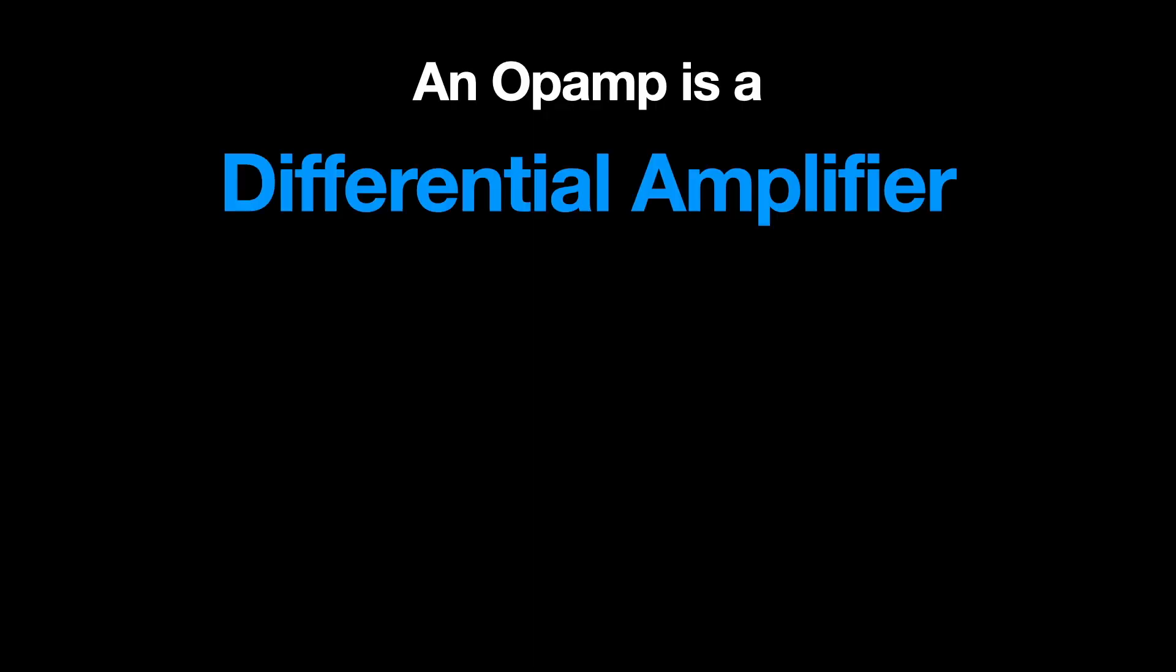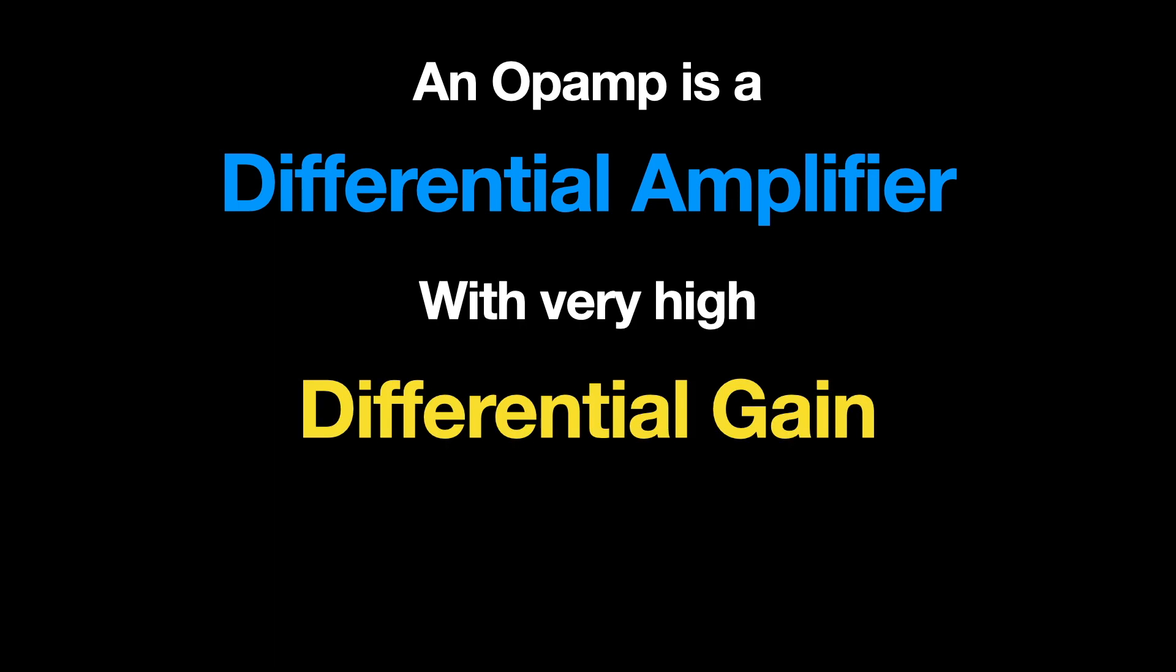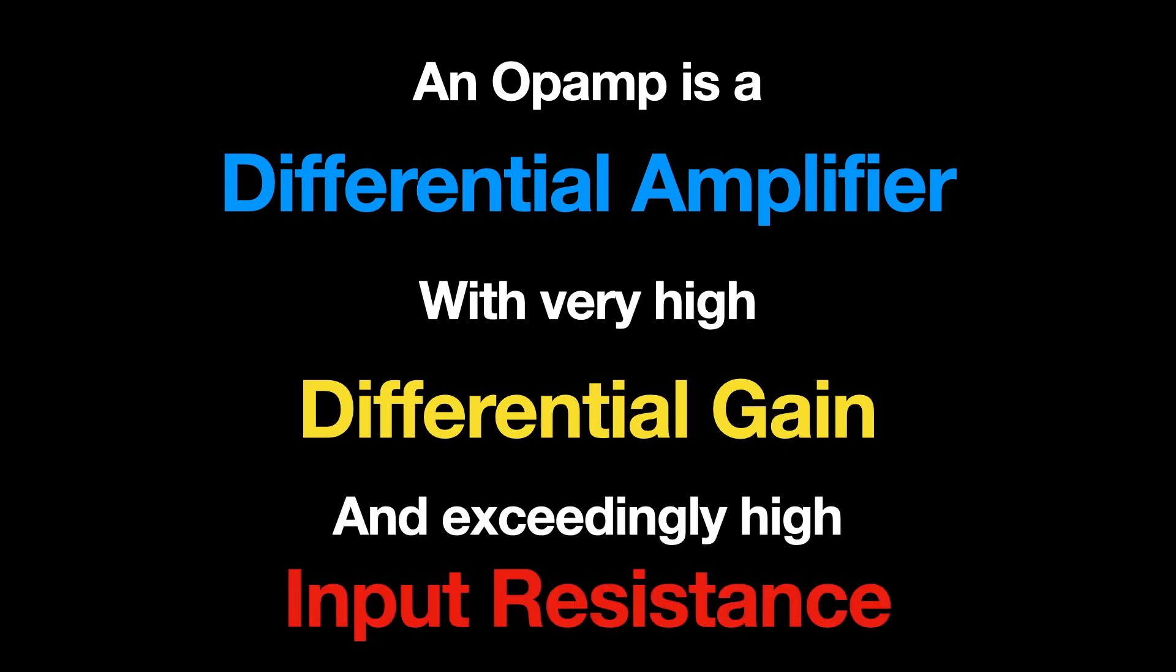In this video, we're going to go through the very basic design principles of how you use op amps, how you think about them and how you understand them. So first of all, we better actually define what it is that we're designing. What is an op amp? An op amp is a differential amplifier with a very high differential gain and an exceedingly high input impedance or input resistance. But I guess we better actually understand what these terms mean.